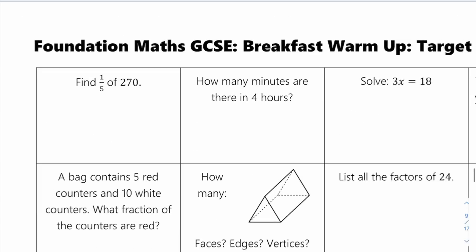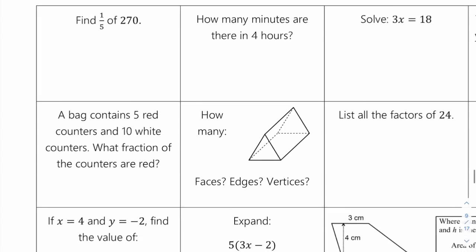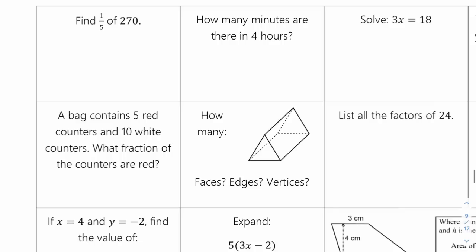Question one: one-fifth of 270. Divide by the denominator and then times by the numerator. So 270 divided by 5 gives an answer of 54, and then times by the numerator — 54 times 1 is 54. So the answer is 54.